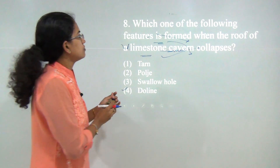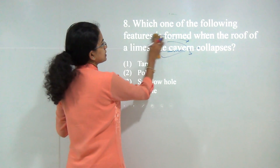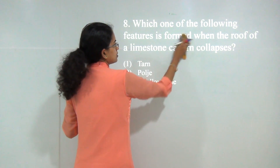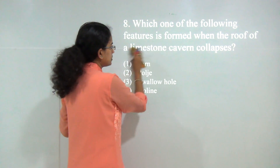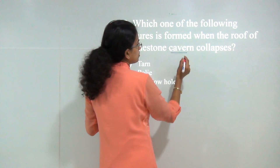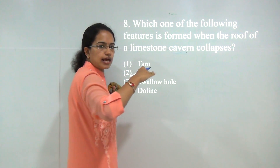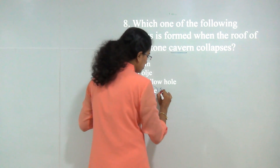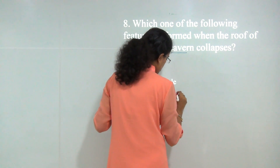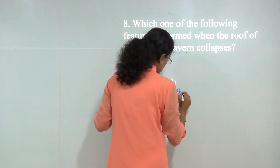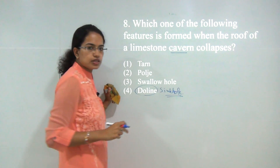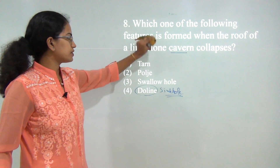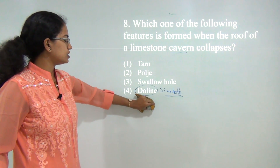Next question: which of the following features is formed when the roof of a limestone cave collapses? 'Karavan' means cave. When the roof of a limestone cave collapses, it forms dolines or sinkholes. We have covered this when talking about underground topography or karst topography, so you can refer to that lecture for details.